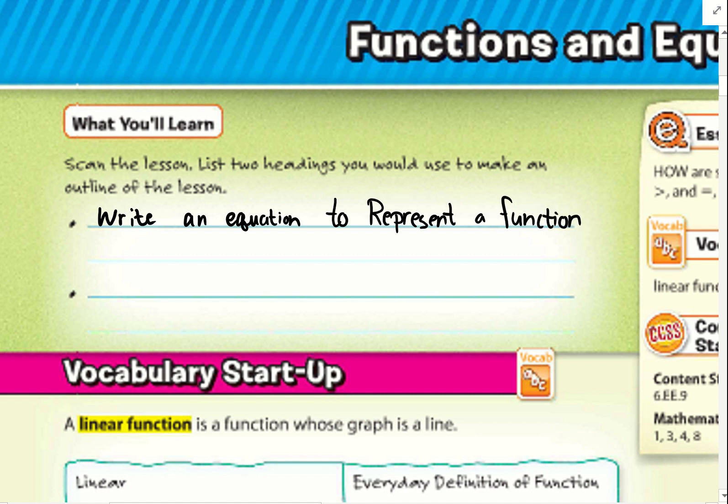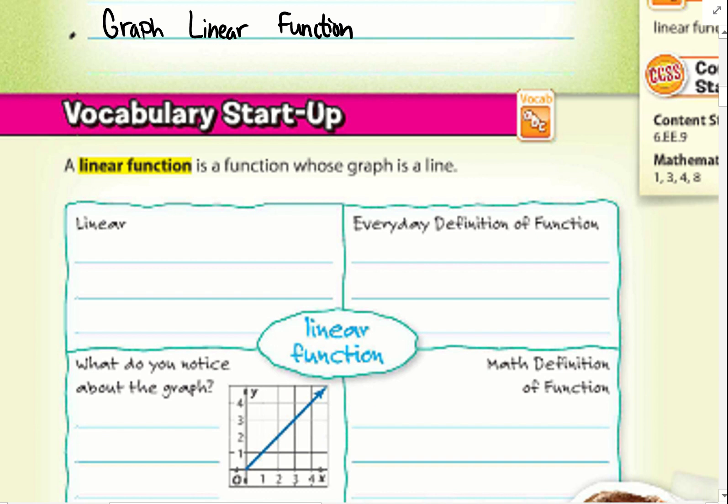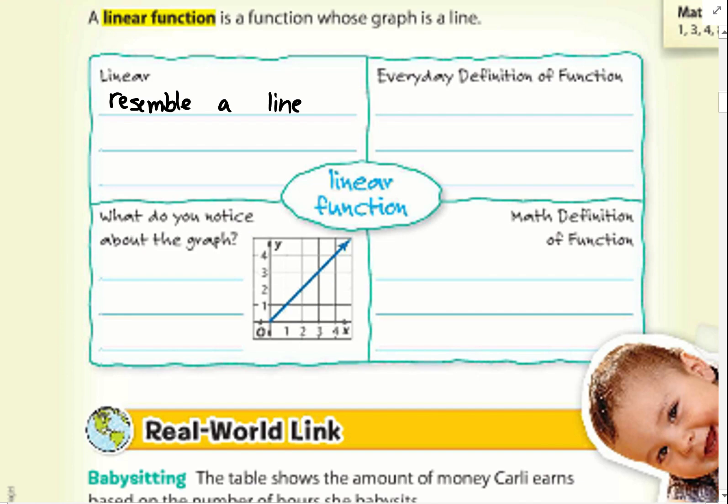The next thing is we're going to graph linear functions and we'll also explain what a linear function is. Linear resembles a line. This is a straight path. What do we notice in the graph? It forms a line.